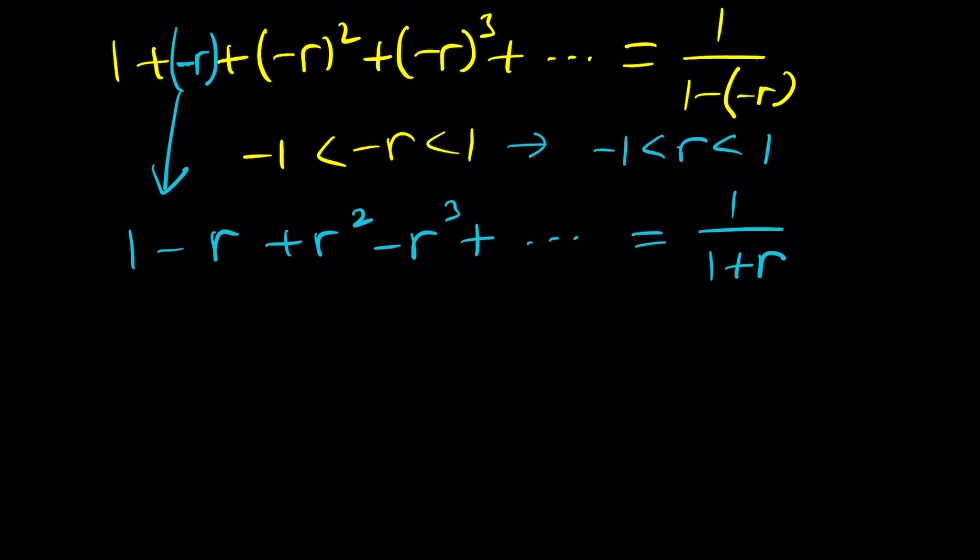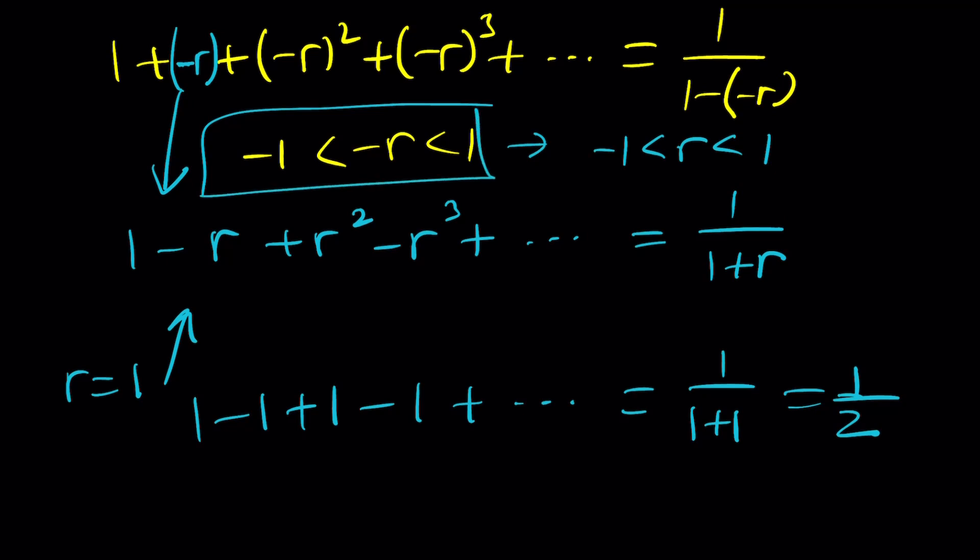So if you go ahead and replace R with 1 here, ta-da! We get 1 minus 1 plus 1 minus 1 plus dot dot dot equals 1 over 1 plus 1, which is 1 half. Yeah, the average wins. But the problem is there is no equality. So R equals 1 cannot be used.